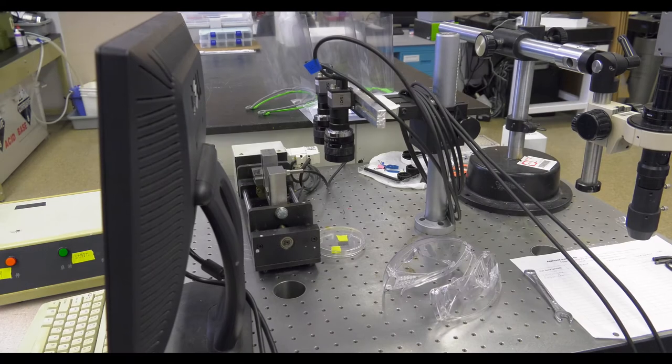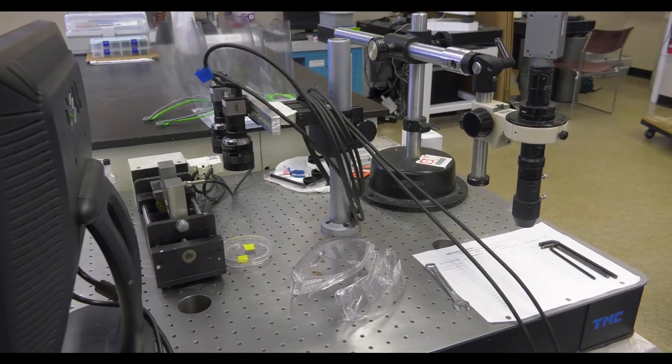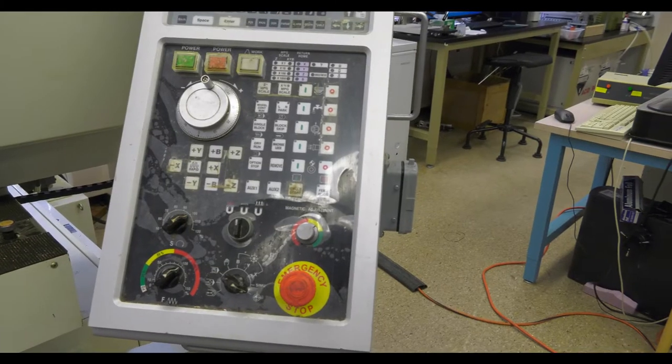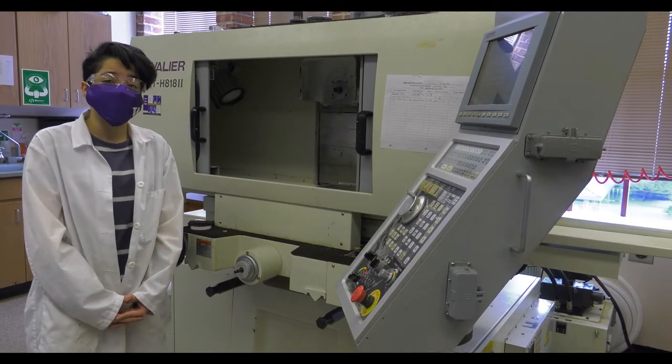Here we have a digital image correlation suite where we can capture real strain of any sample. Here we have our slicer grinder with a diamond saw, and we use this to section teeth.